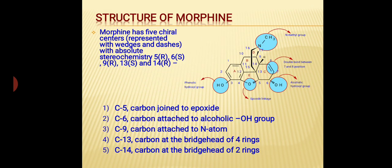The next important structural component is the presence of 5 chiral centers. The first one is C5, the carbon joined to the epoxide. C6 is the carbon attached to the alcoholic OH group. C9 is the carbon attached to the nitrogen atom. C13 is the carbon at the bridgehead of 4 rings. C14 is the carbon at the bridgehead of 2 rings.